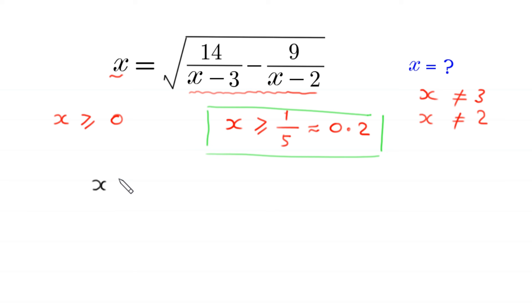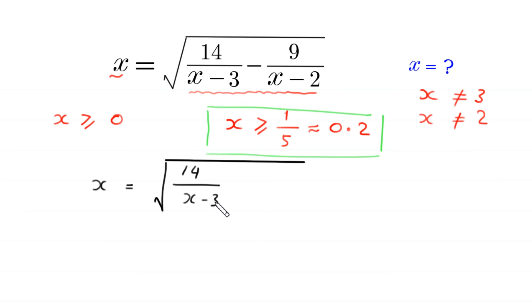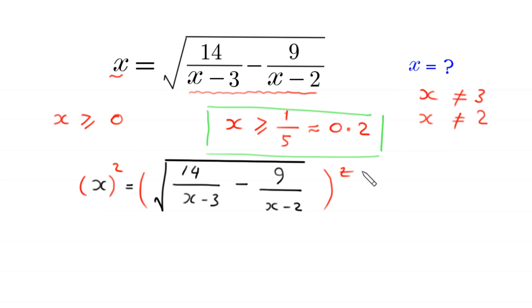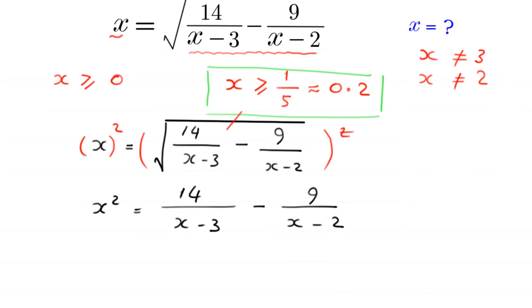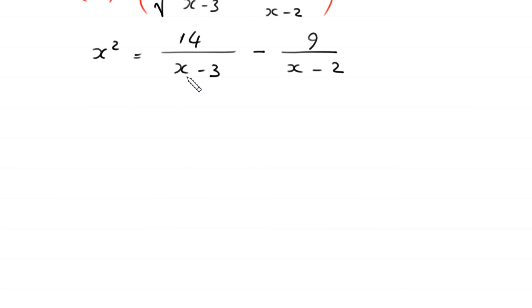Squaring both sides of x equals the square root of (14 over (x minus 3) minus 9 over (x minus 2)), the square cancels with the square root, and the equation becomes x squared is equal to 14 over (x minus 3) minus 9 over (x minus 2).